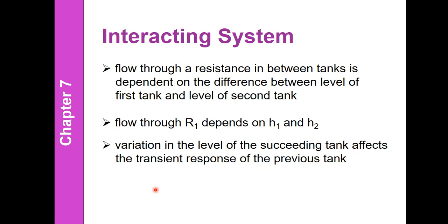For a two-tank interacting system, the flow through linear resistance R1 depends on both levels H1 and H2. This time, variation in the level of the succeeding tank affects the transient response of the previous tank. The level of the succeeding tank is now a determining factor in the flow through the linear resistance, so its variation affects the previous tank's transient response since both levels factor into the flow through the resistance between the two tanks.